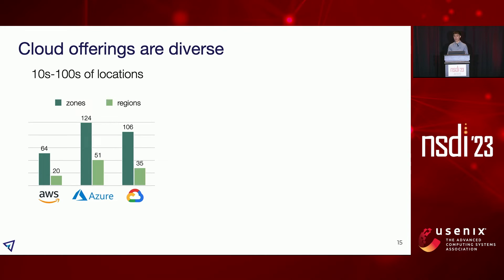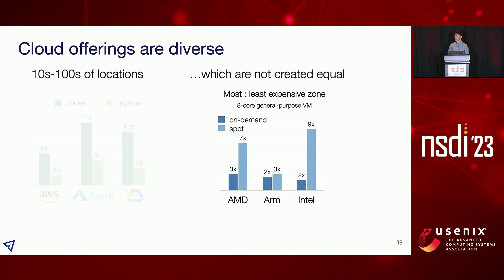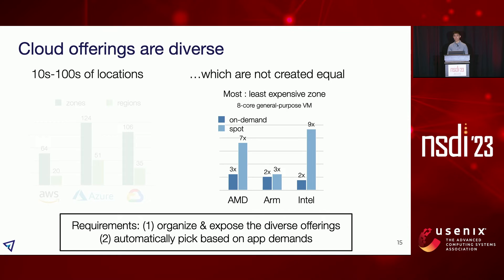Today's cloud offerings are very diverse. Out of the top three clouds, there are hundreds of zones and tens of regions. More importantly, these locations are very different — they have different offerings and pricing can differ quite a bit. Looking at a particular eight-core general purpose instance type across three clouds, we see up to three times difference for on-demand pricing and up to nine times difference for spot pricing. So the broker system should automatically organize all these diverse offerings and expose this complex information in an easy-to-use manner, and automatically pick the best location and offering to execute each application.